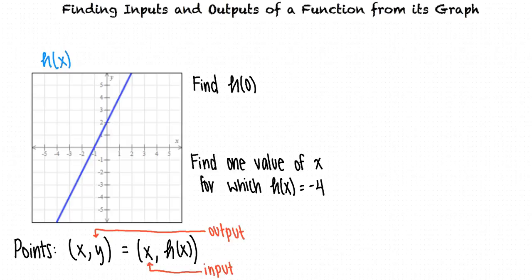So how would we go about solving our problem? To find h of 0, we find the output when the input is 0. There's one point on the graph where the x-coordinate is 0, which is the point 0 comma 2. Therefore, h of 0 equals 2.